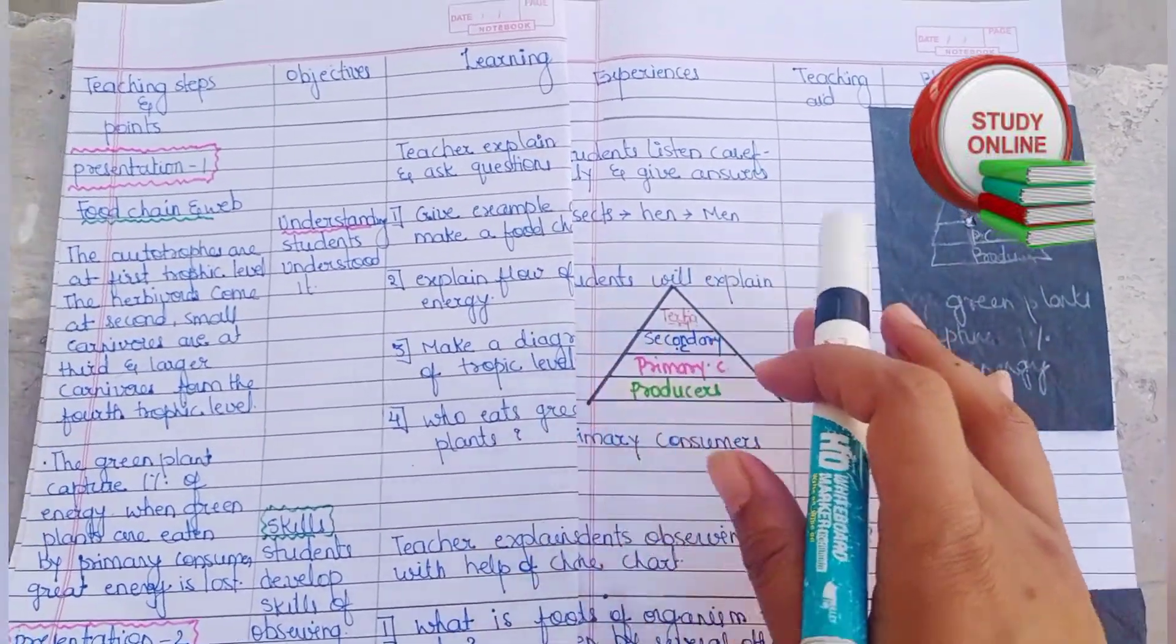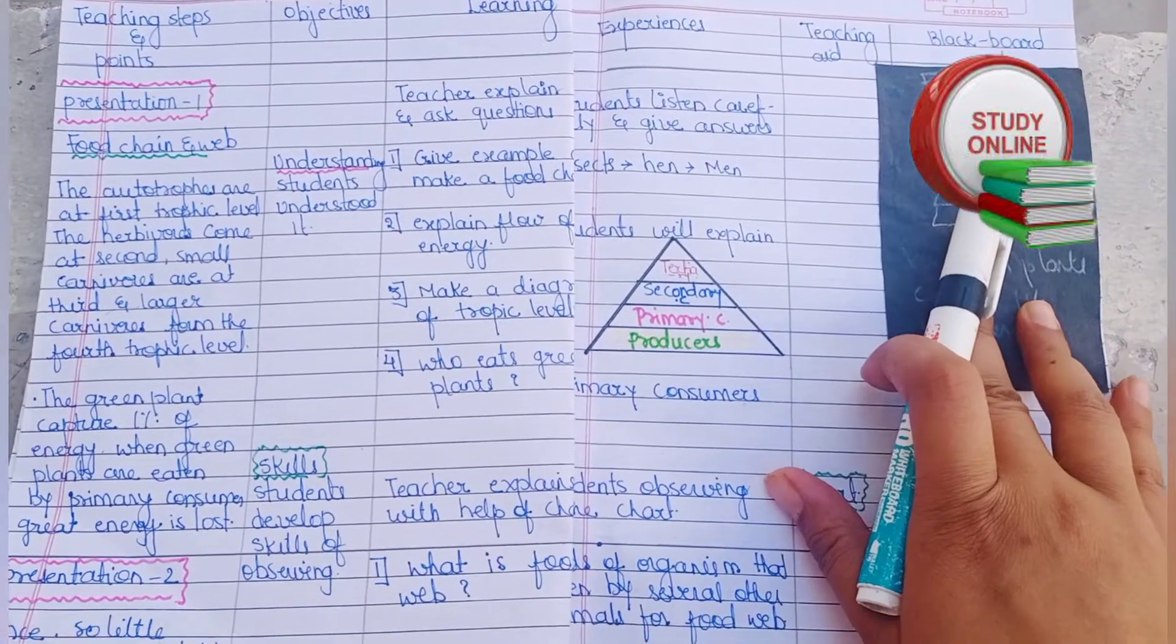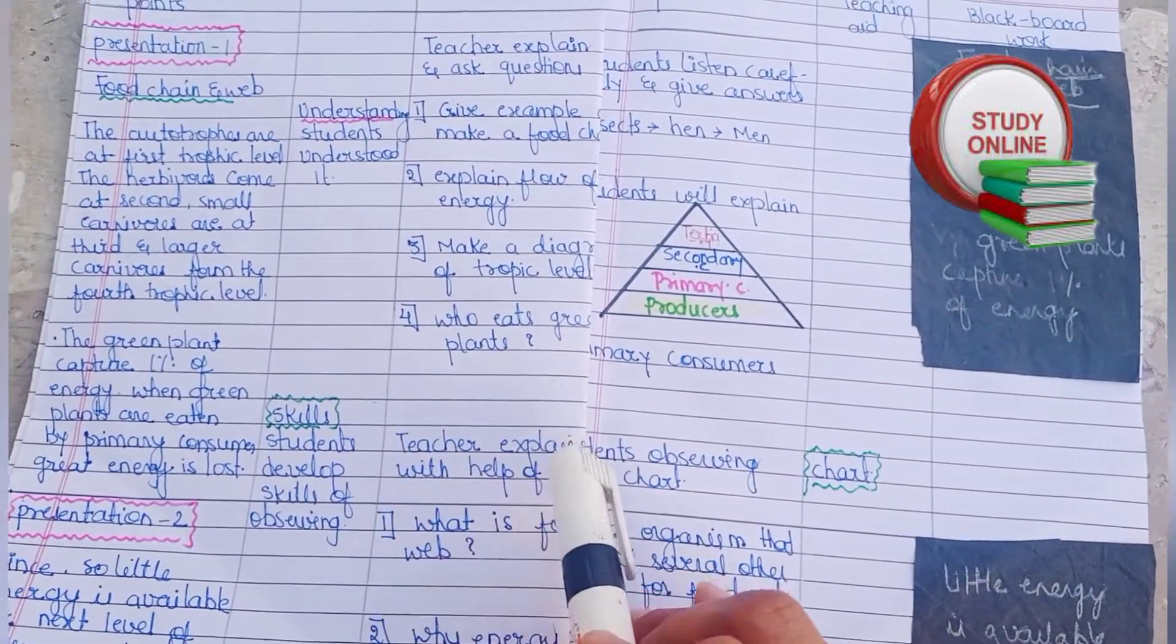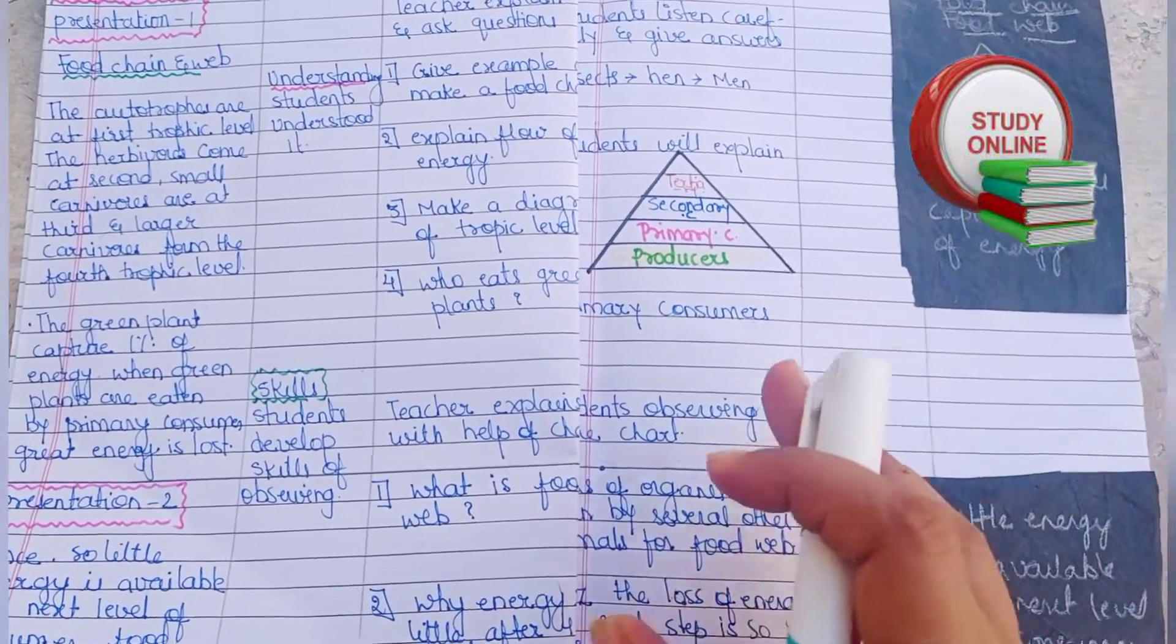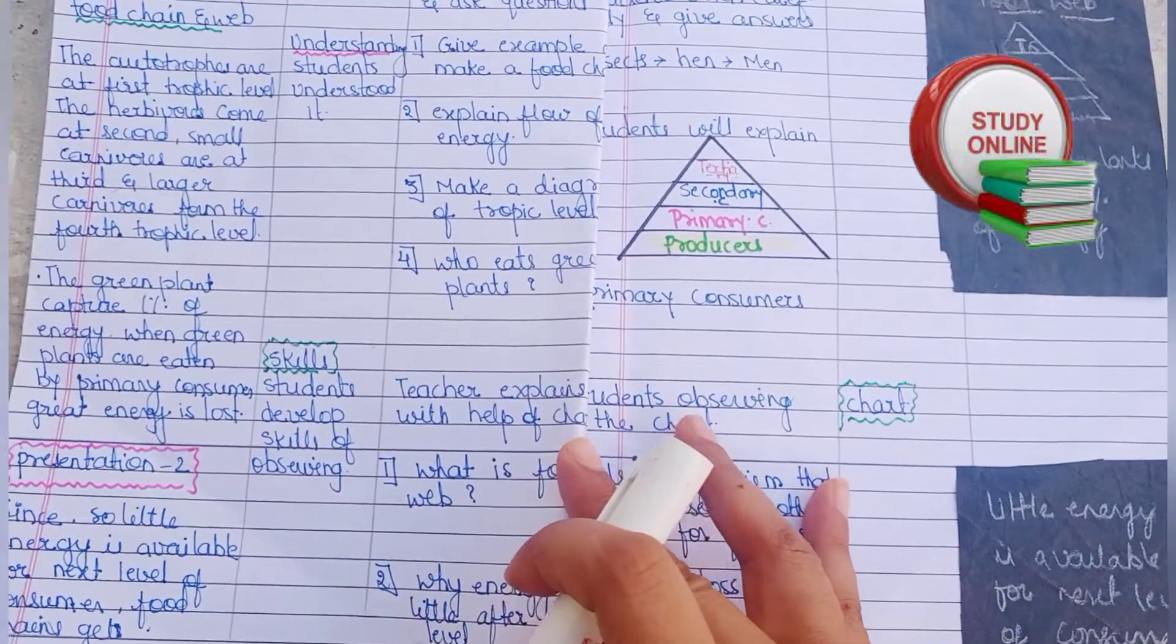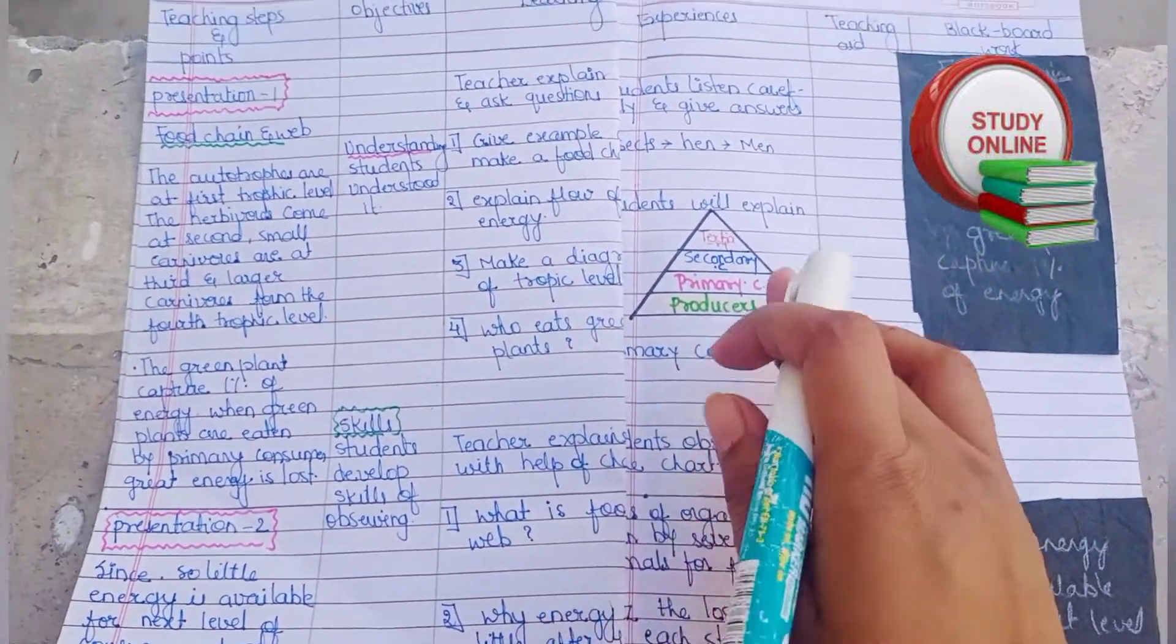This is our blackboard work. Here in the skills section, the teacher explains everything properly with the help of a chart or any model. Here, students observe the chart. For teaching aids, we write 'chart'.